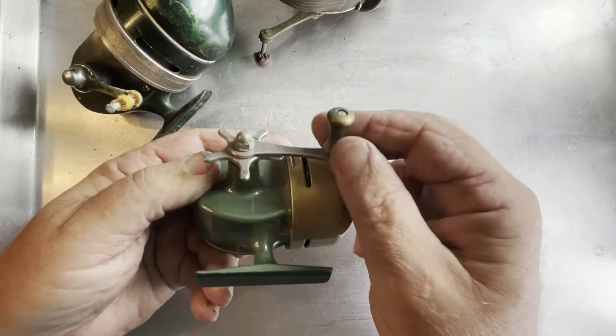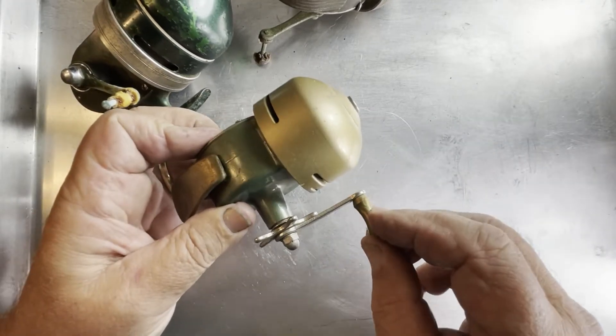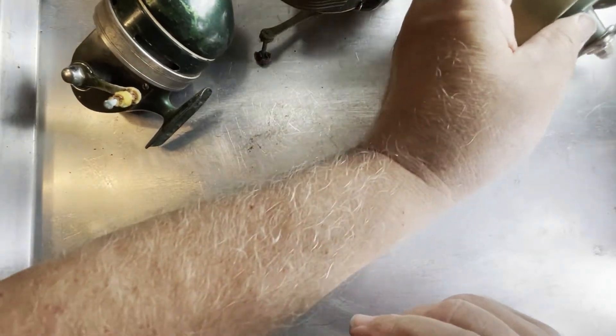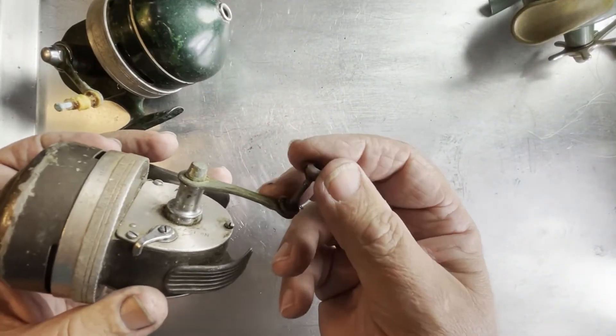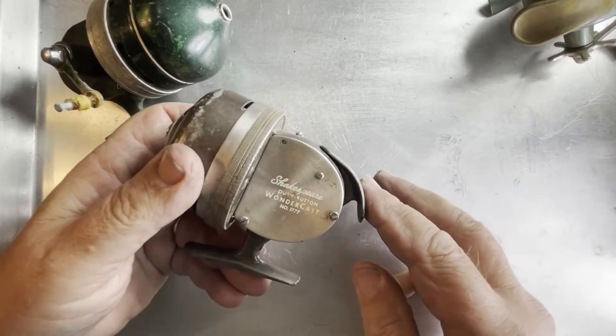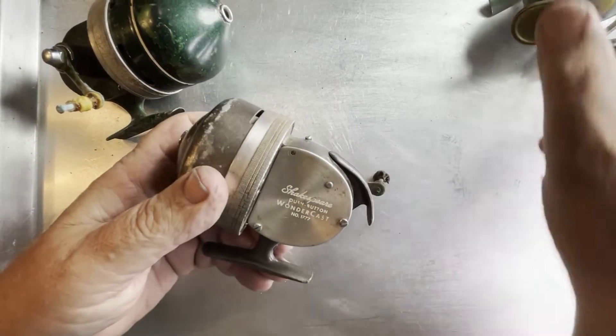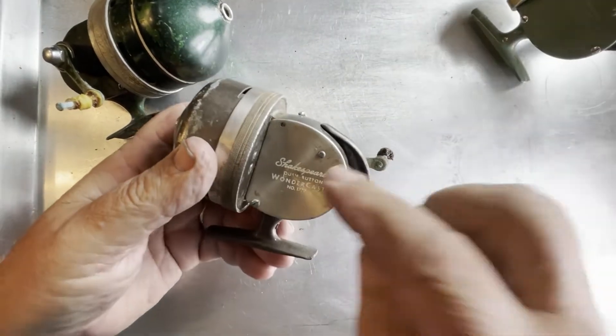Unfortunately for this one, the handle's in really nice shape. Most of these Shakespeare spin cast reels that I've encountered have this type of problem with the handle. So I've got to see what I can do for this one. And this is a Wondercast 1777.